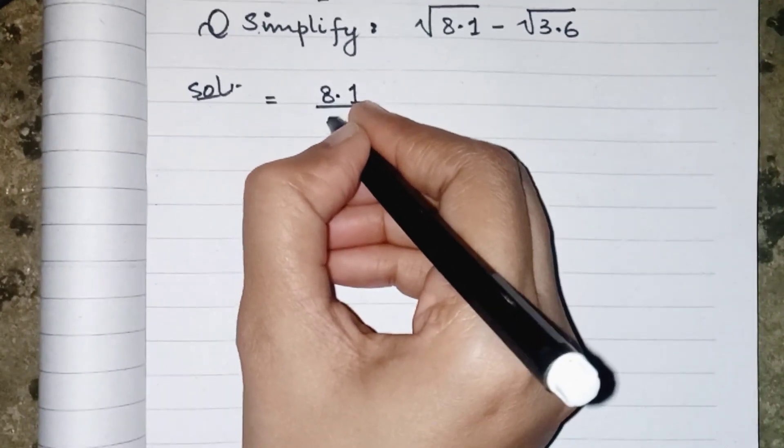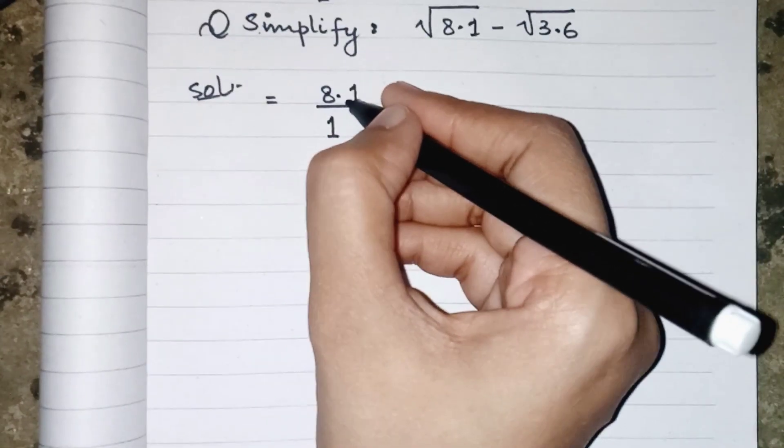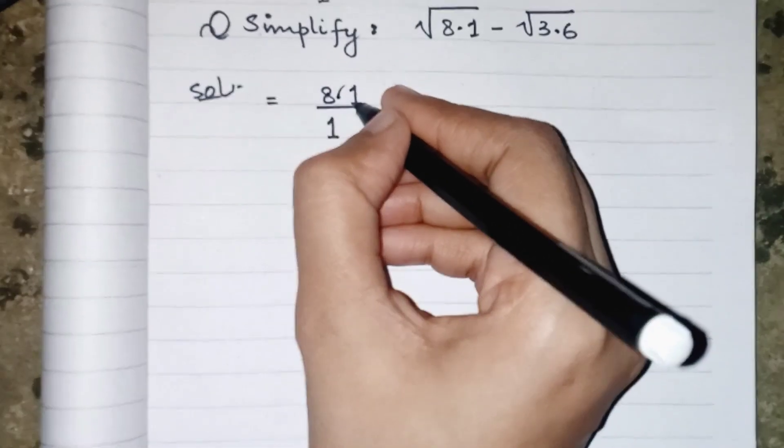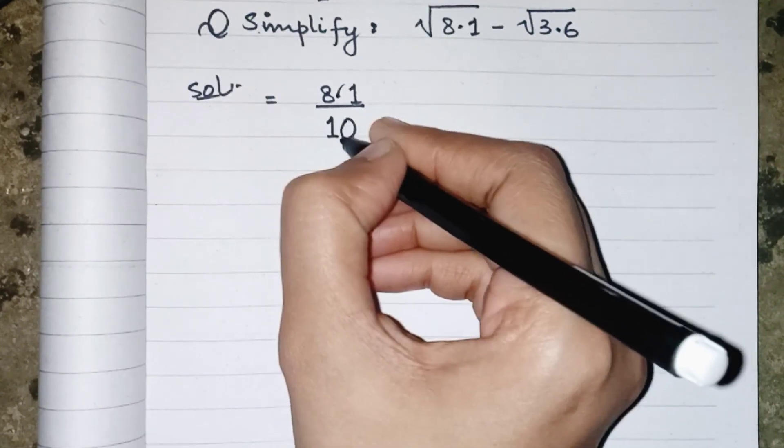Now we have to remove the decimal. To remove a decimal, we have one digit after the decimal, so we have to place 0 along with 1 in its denominator.